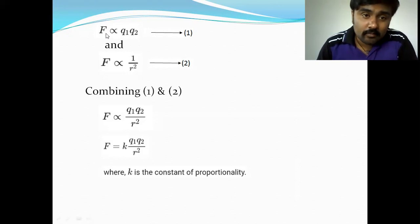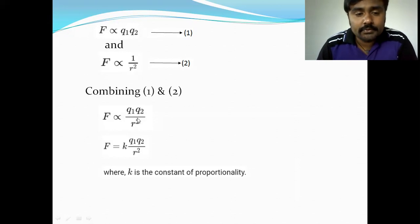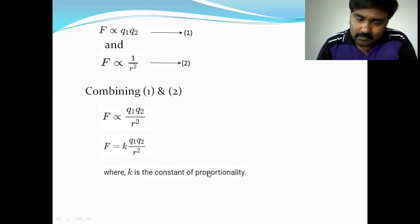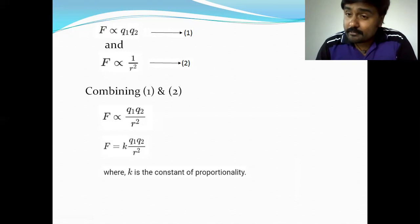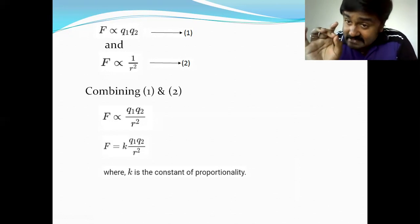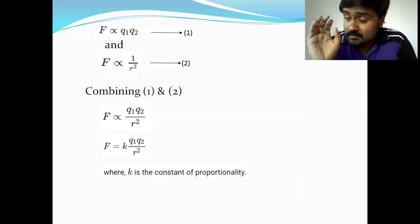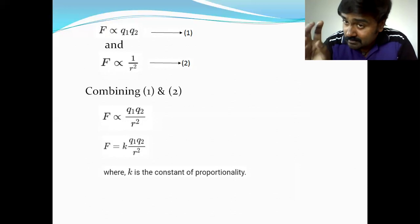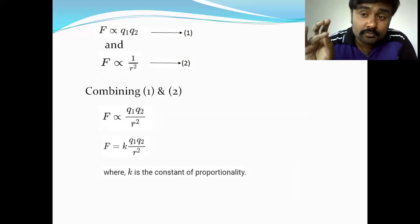Combining equation one and equation two, we get F is proportional to Q1 times Q2 divided by r squared. Removing the proportionality, we introduce the proportionality constant k, called the Coulomb's constant or electrostatic force constant. The Coulomb's constant depends on two important factors: number one, the system of units used; and number two, the medium existing between the two point charges.